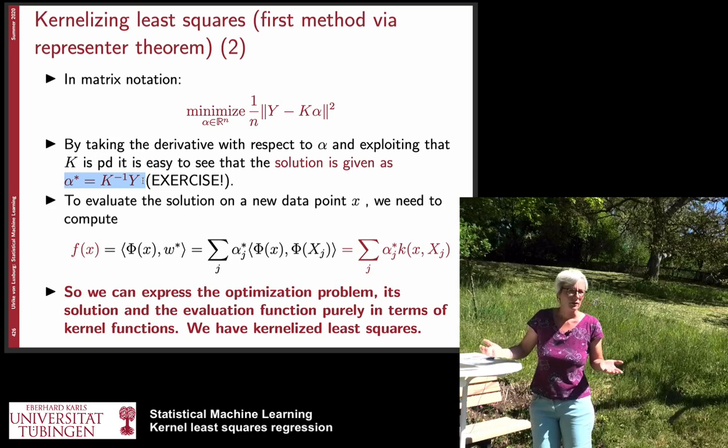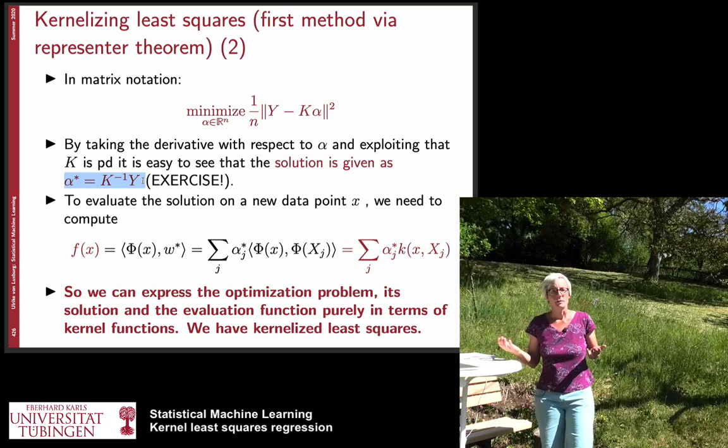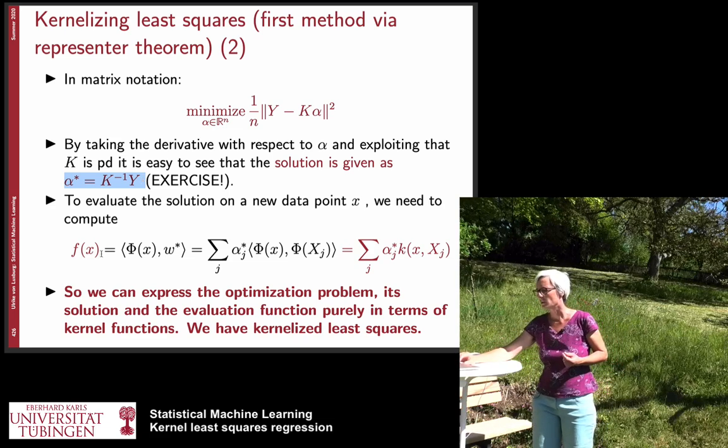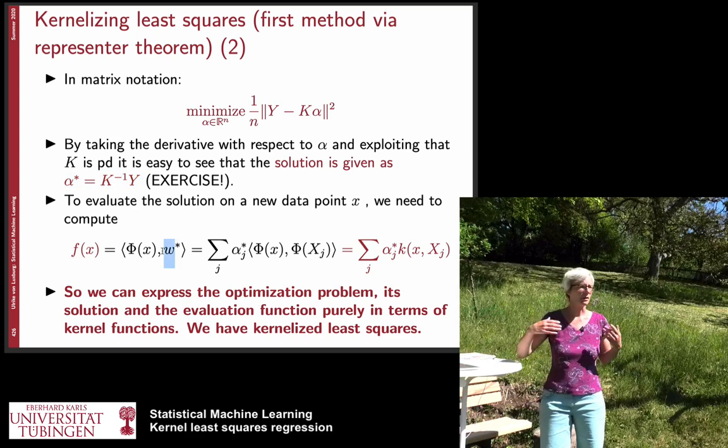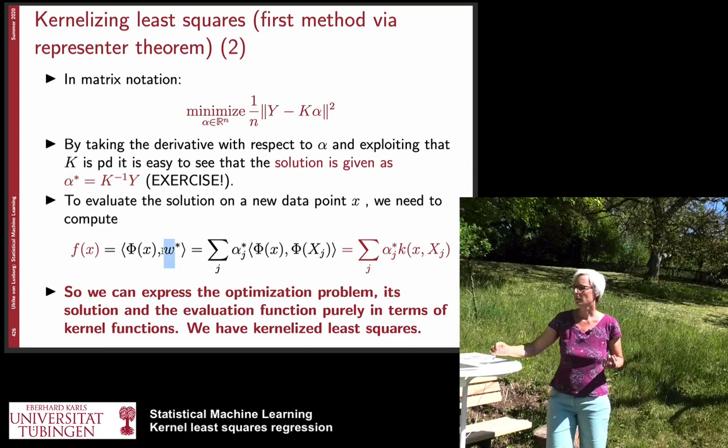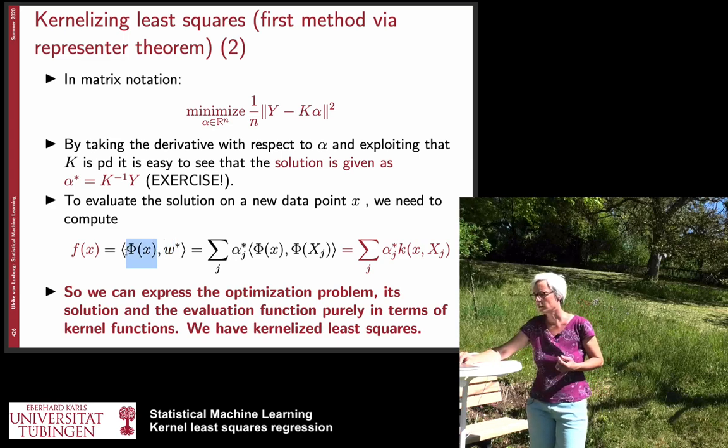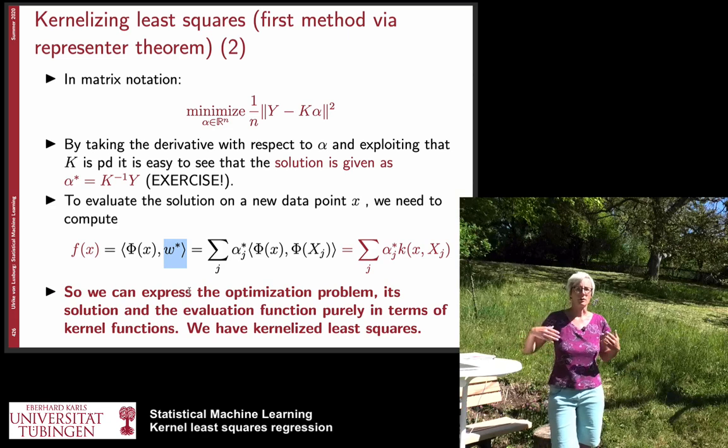Now this is the solution and again we are also able to evaluate the solution on a new test point and the reason why this works is again because we have here the representer theorem. So if you want to now apply our function to a new test point. So here is phi of x is our new test point. We need to compute the scalar product with respect to W star.